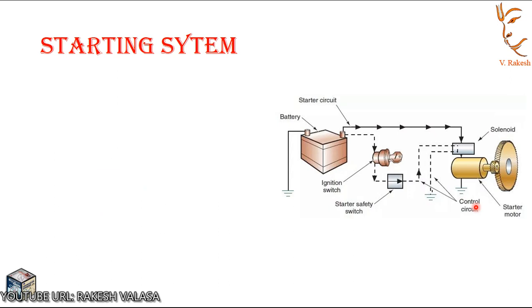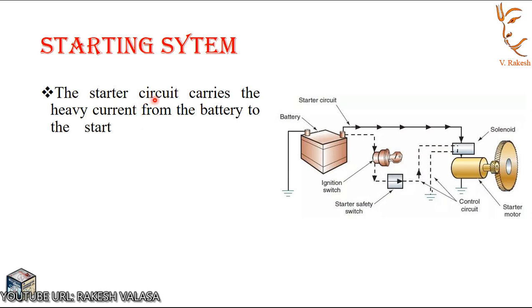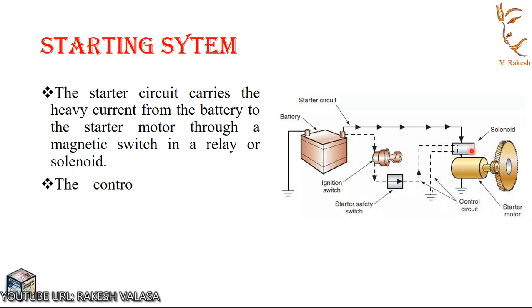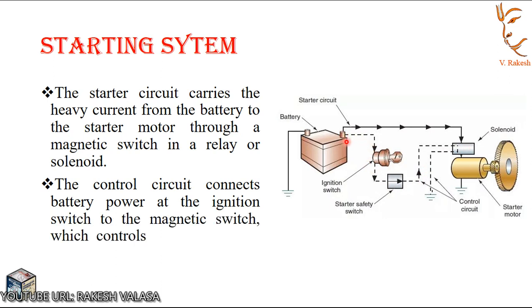The entire system is divided into two circuits: one is starter circuit, another one is control circuit. The starter circuit carries the heavy current from the battery to the starter motor through a magnetic switch. The control circuit connects the battery power at the ignition switch to the magnetic switch which controls the high current to the starter motor.